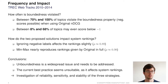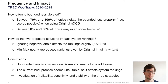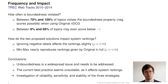First, we study the frequency and impact of boundedness violations that can occur. We address two questions based on data from the TrackWeb tracks from 2010 to 2014. How often is boundedness violated? When calculating the worst possible scores for each topic, between 70 and 100 percent of topics may violate the boundedness property. Between 8 to 68 percent of topics may even score below minus 1, effectively doubling the range of possible NDCG scores. We thus conclude that unboundedness is a widespread issue and needs to be addressed.